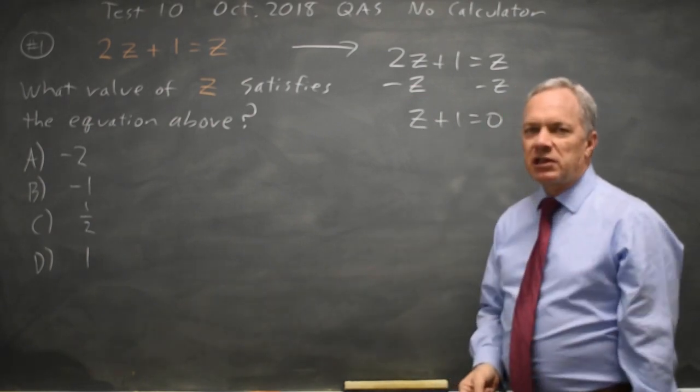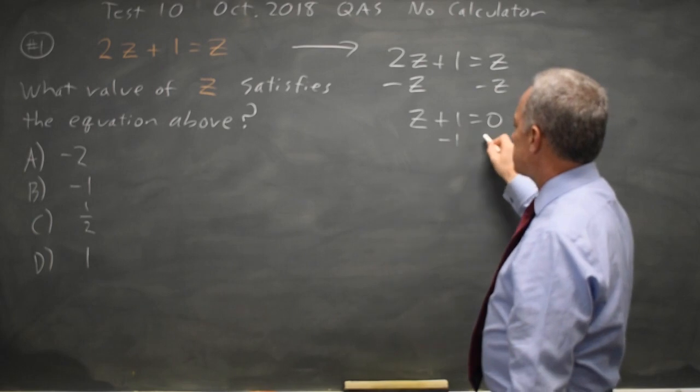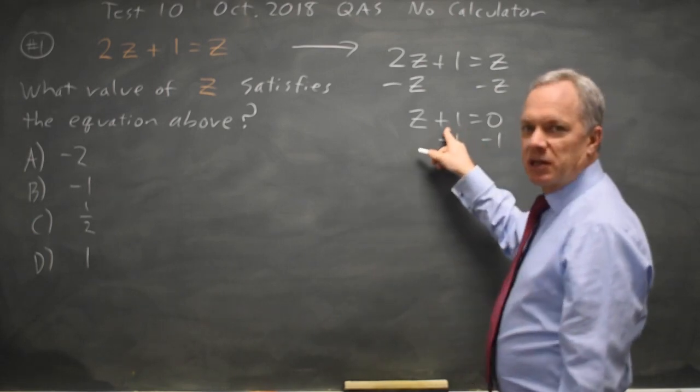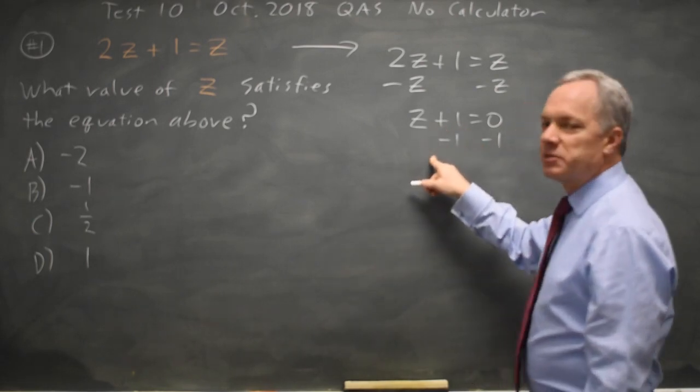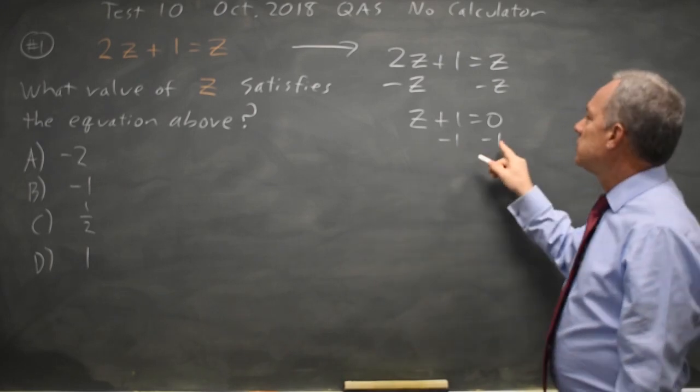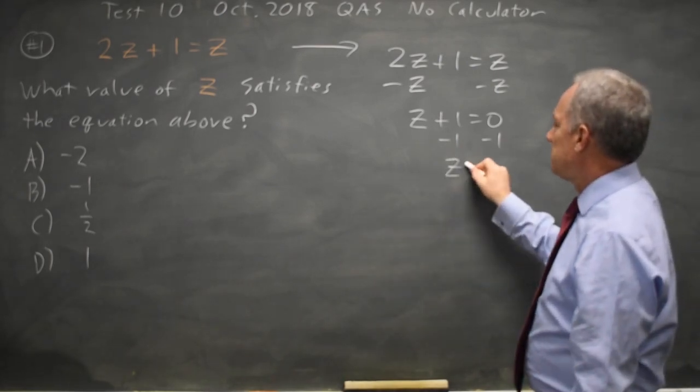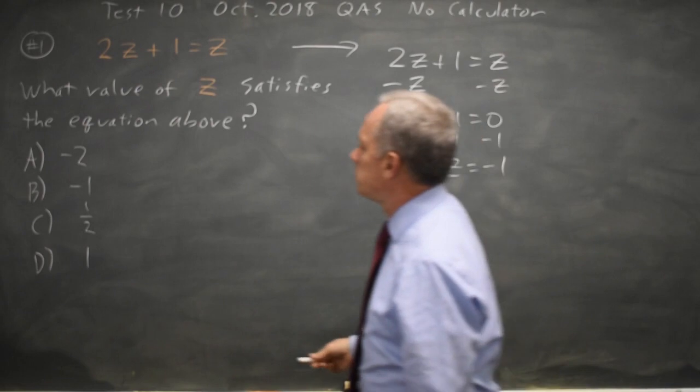Now that I've collected like terms I'm going to move the constant to the other side. Since I've added 1, I'm going to subtract 1 on the left and I always do the same thing to both sides of the equation. So I subtract 1 on the right and get z equals negative 1, which is choice b.